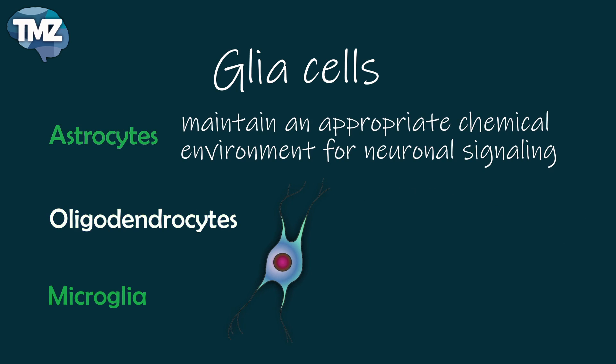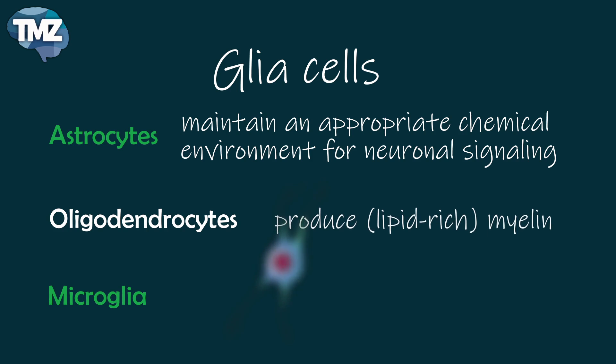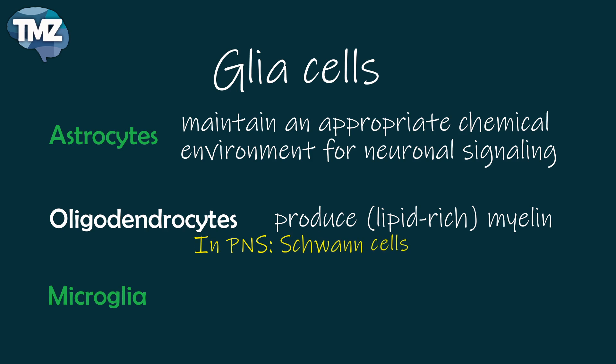Oligodendrocytes, which are also restricted to the central nervous system, lay down a lipid-rich wrapping called myelin around some but not all axons. Myelin has important effects on the speed of action potential conduction, and this will be covered in another video. In the peripheral nervous system, the cells that elaborate myelin are called Schwann cells.